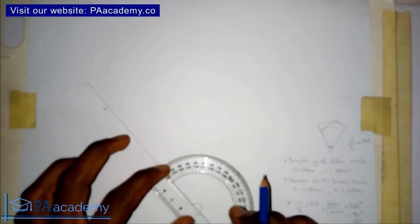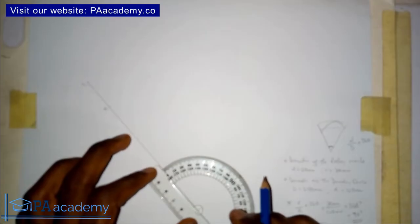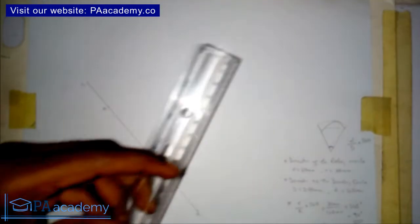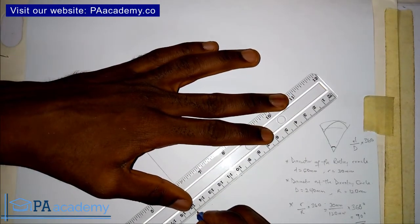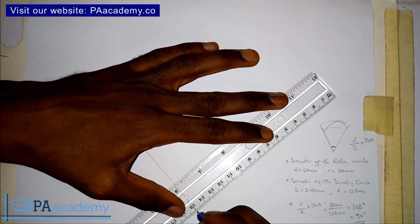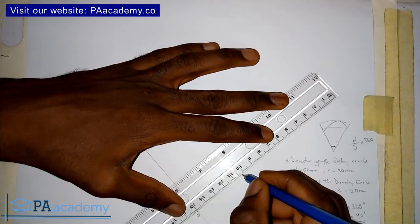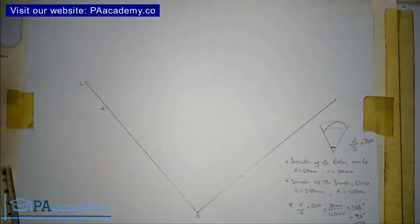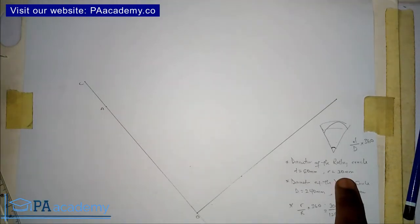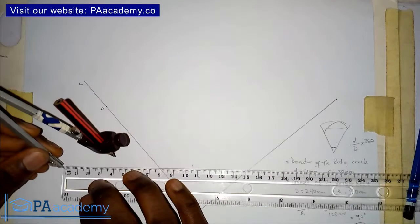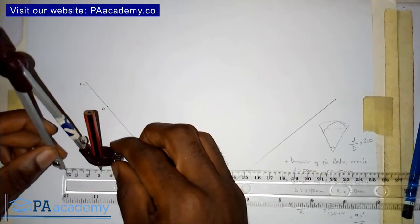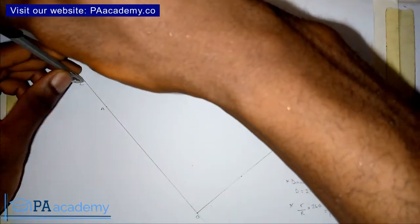Having done that, the next thing is to bring in our protractor and measure 90 degrees so we can draw the second line. Make sure your protractor is properly placed. At point C we are going to draw a circle with the radius of the rolling circle, which is 30mm. I'll bring in my compass, measure 3cm which is the same as 30mm, place it on point C and draw a circle.